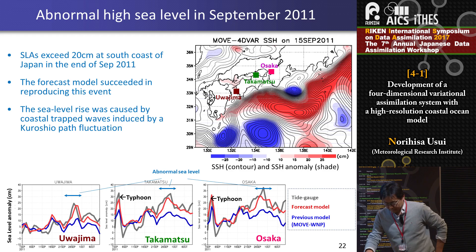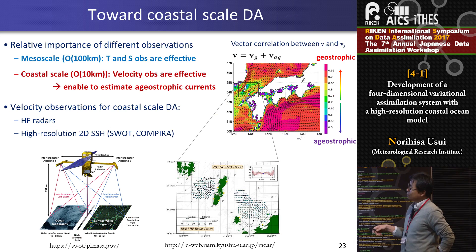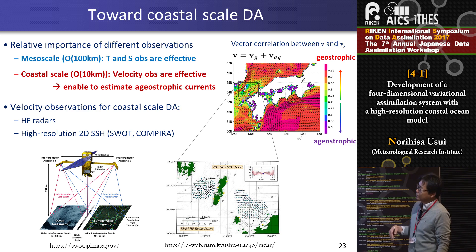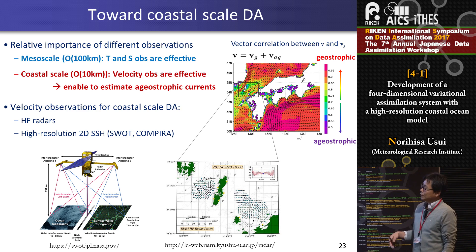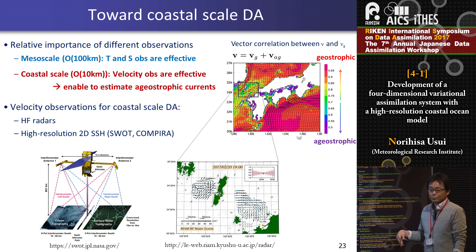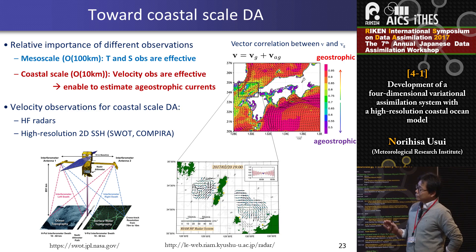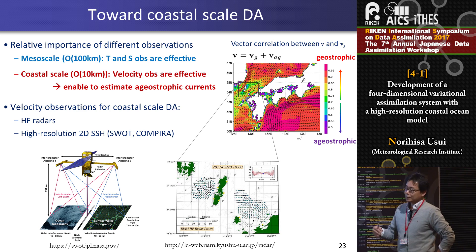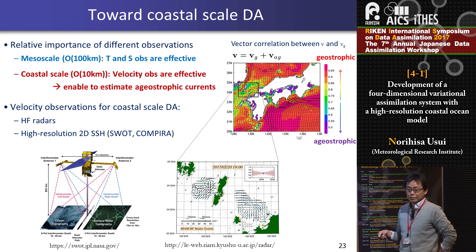Finally, I'd like to mention the future perspective of our coastal system. As mentioned before, the horizontal resolution of the analysis model is still 10 kilometers, so the target of data assimilation is still mesoscale variability. We need coastal-scale data assimilation for further improvement. Based on the geostrophic adjustment theory, velocity observation becomes very important at coastal scales. Not only geostrophic, but also ageostrophic components become important in coastal scales. Assimilating velocity data is indispensable for coastal scale data assimilation.